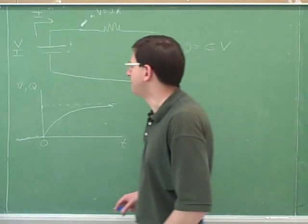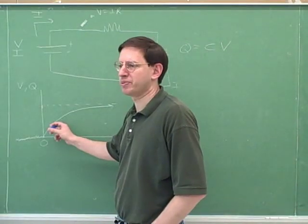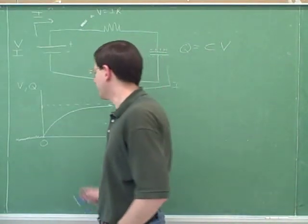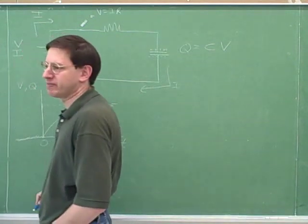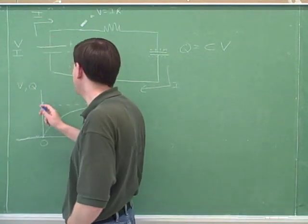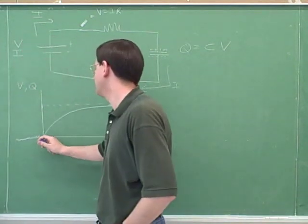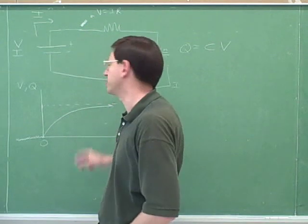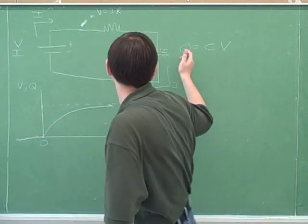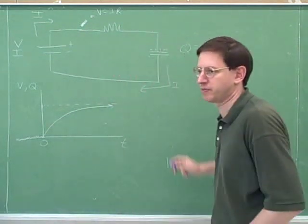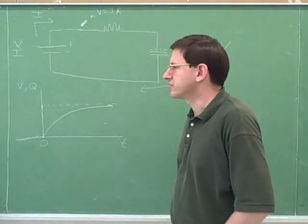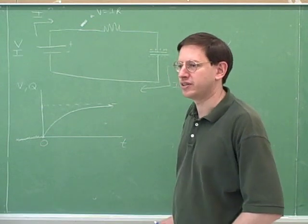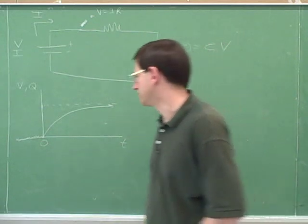This proves what we said earlier: the voltage doesn't jump. A naive person might think that we were going to jump right to the maximum, but instead of jumping to the maximum, we have to gradually and asymptotically approach the maximum, because it takes time for the charges to accumulate. Capacitors resist jumps in voltage; they don't allow the voltage to jump.